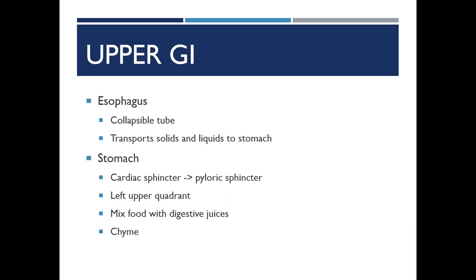Hydrochloric acid combines with digestive enzymes to cause a breakdown of food structures and helps kill harmful bacteria ingested with food. Pepsin is an enzyme produced in the mucosal lining of the stomach that acts to degrade protein. Intrinsic factor is a protein produced by cells in the stomach lining; it's needed for the intestines to efficiently absorb vitamin B12, which is needed to produce red blood cells. Mucus protects the stomach lining from damage by gastric acid and enzyme activity.